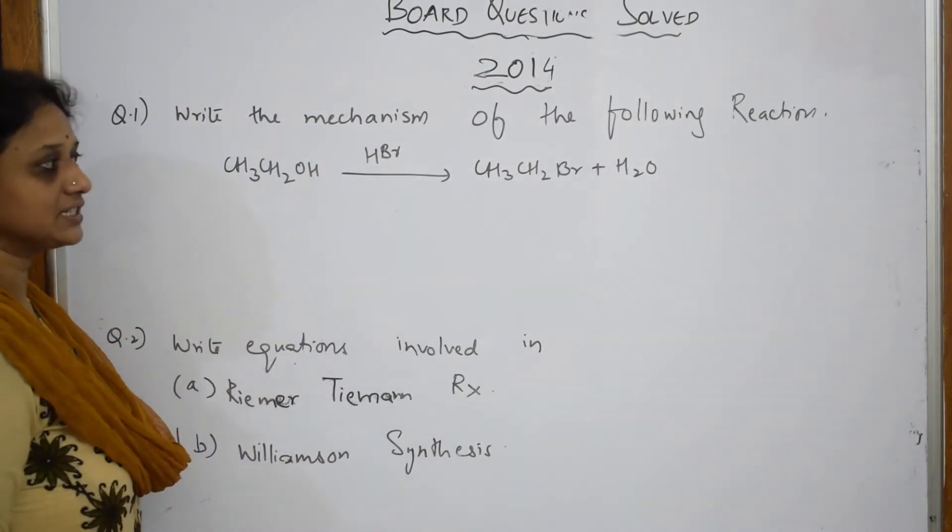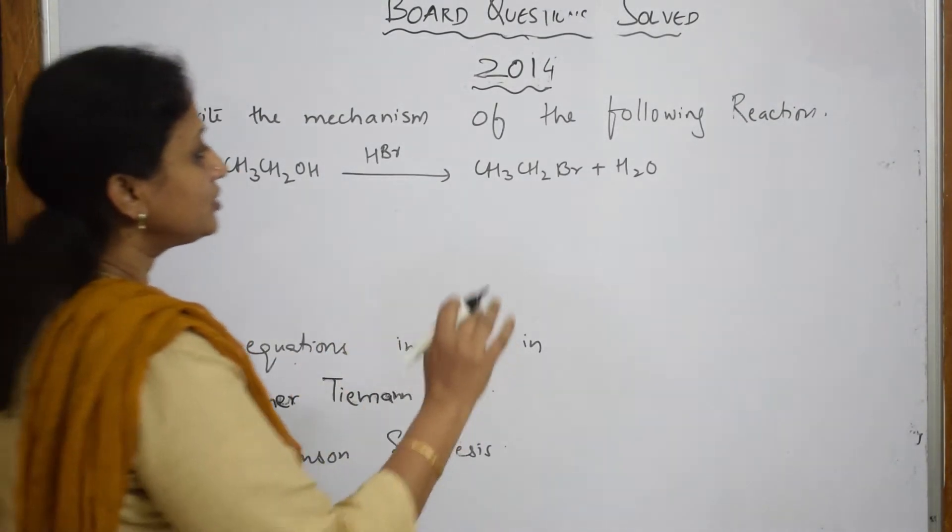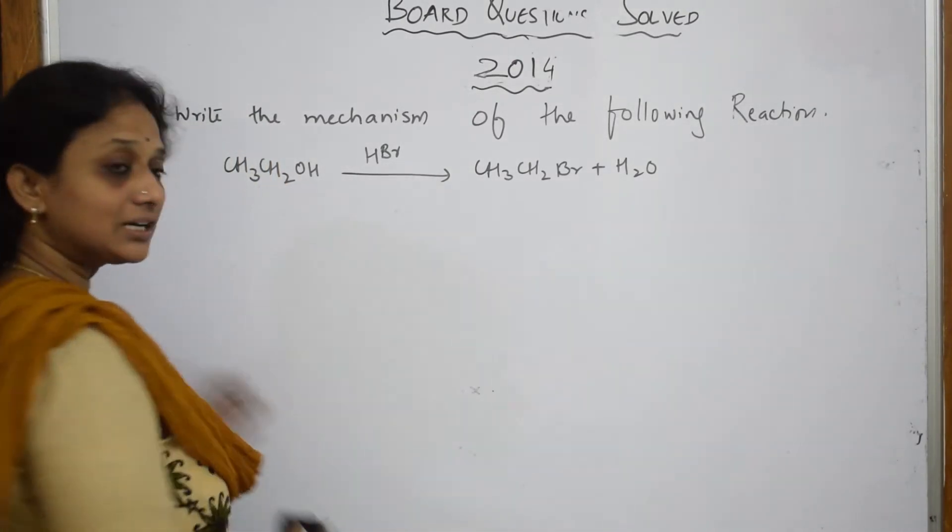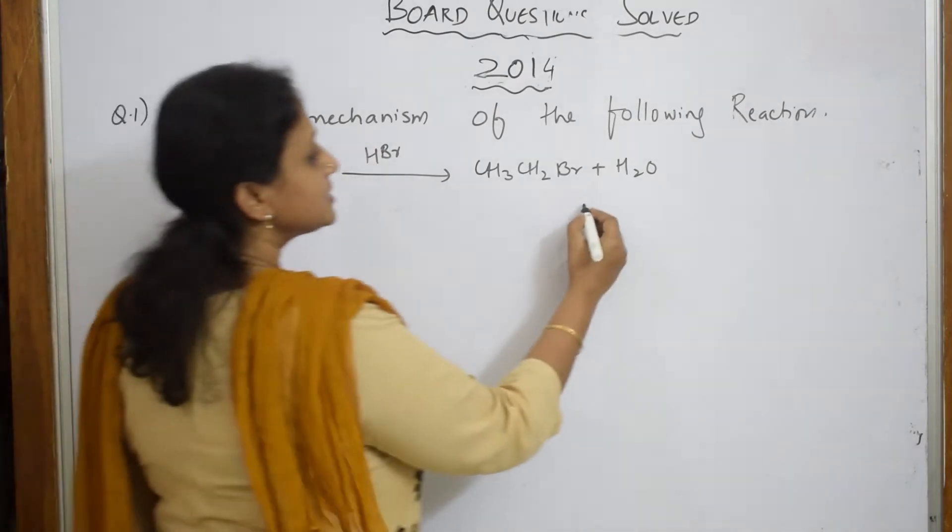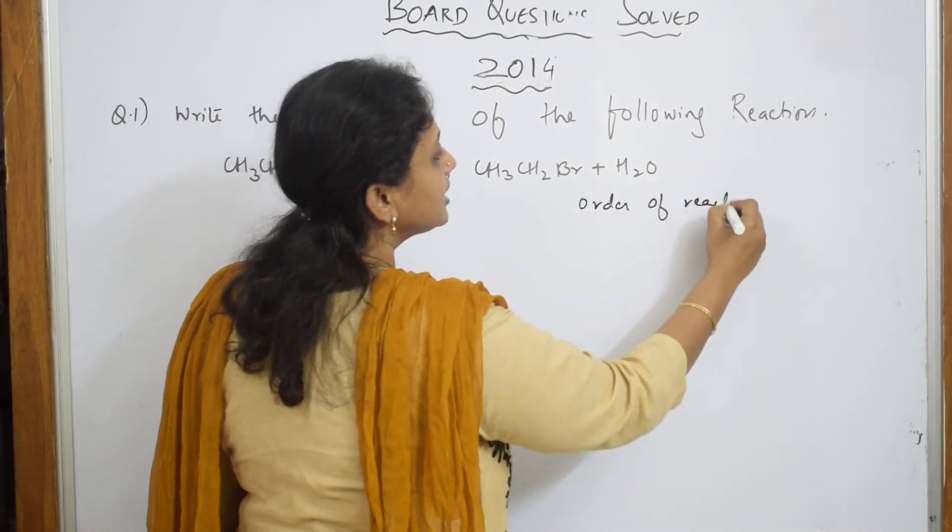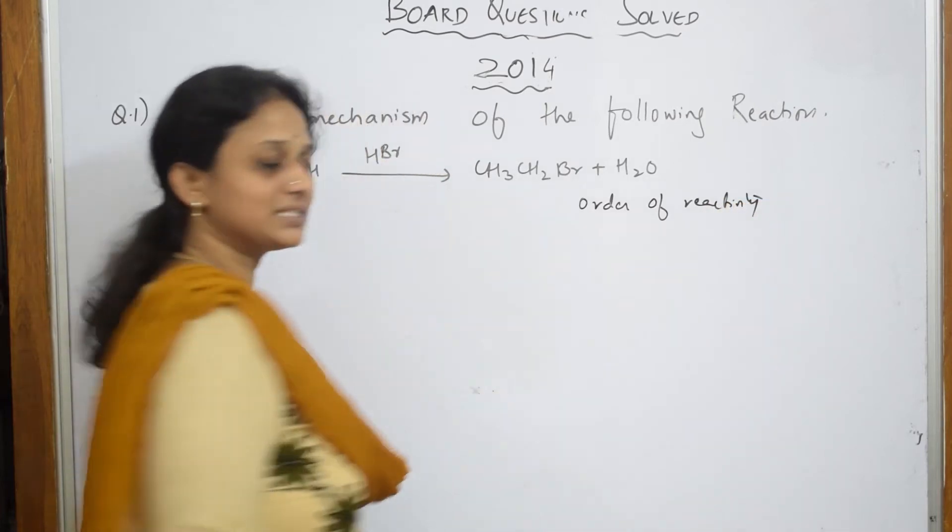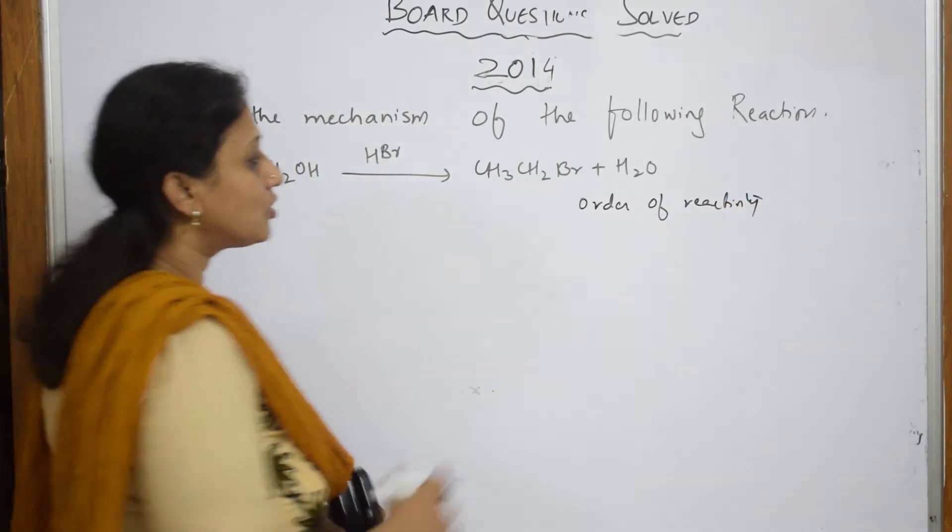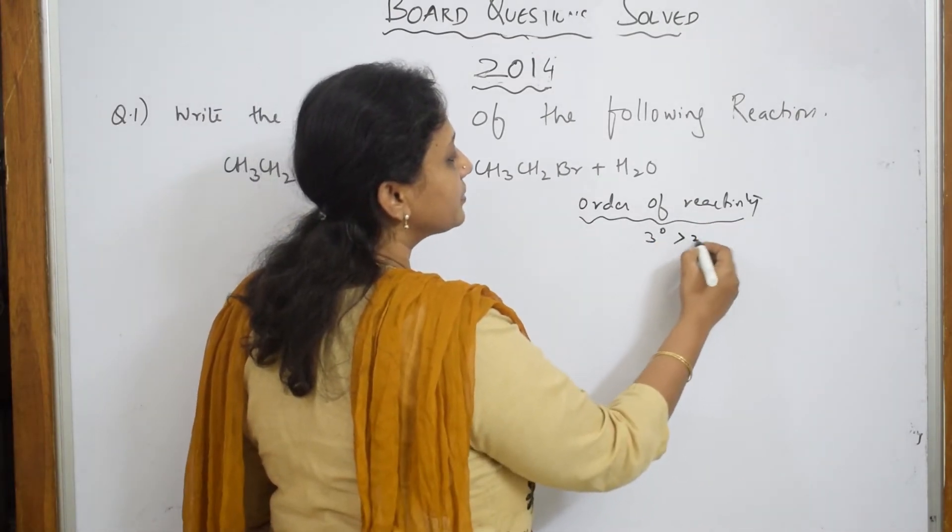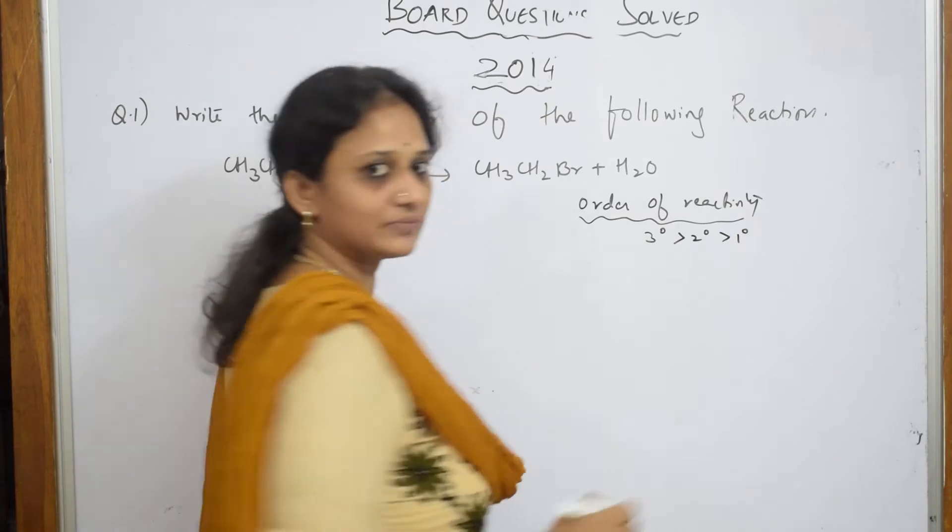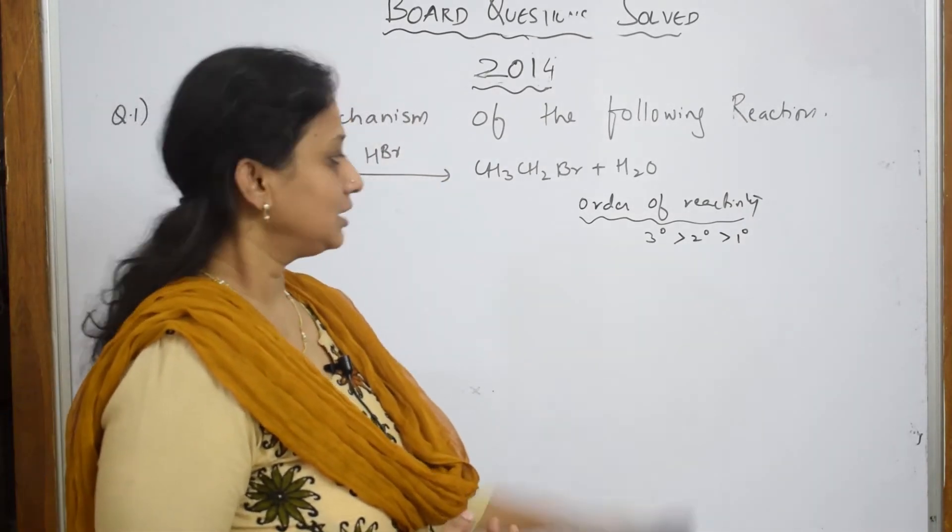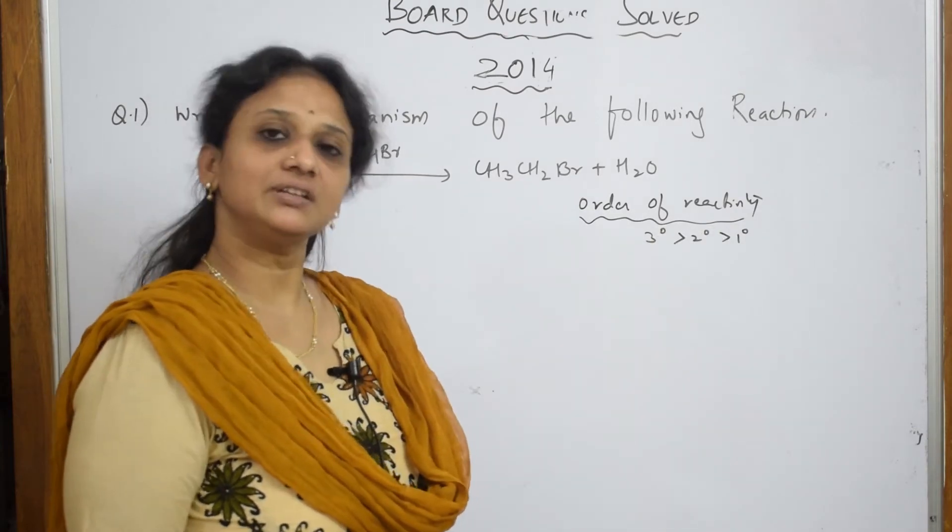When such thing is given first basically you are going to start your answer stating the order of reactivity. When I speak about the order of reactivity means basically they have given me primary alcohol. Order of reactivity for this is tertiary is more preferred than secondary, more preferred than primary.